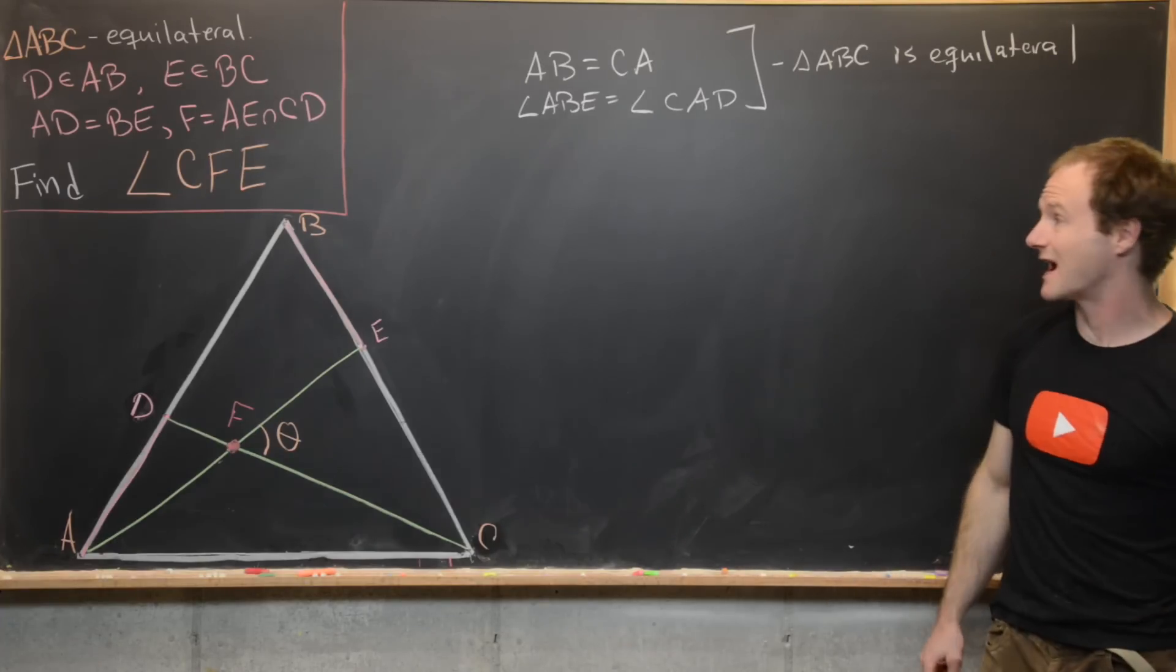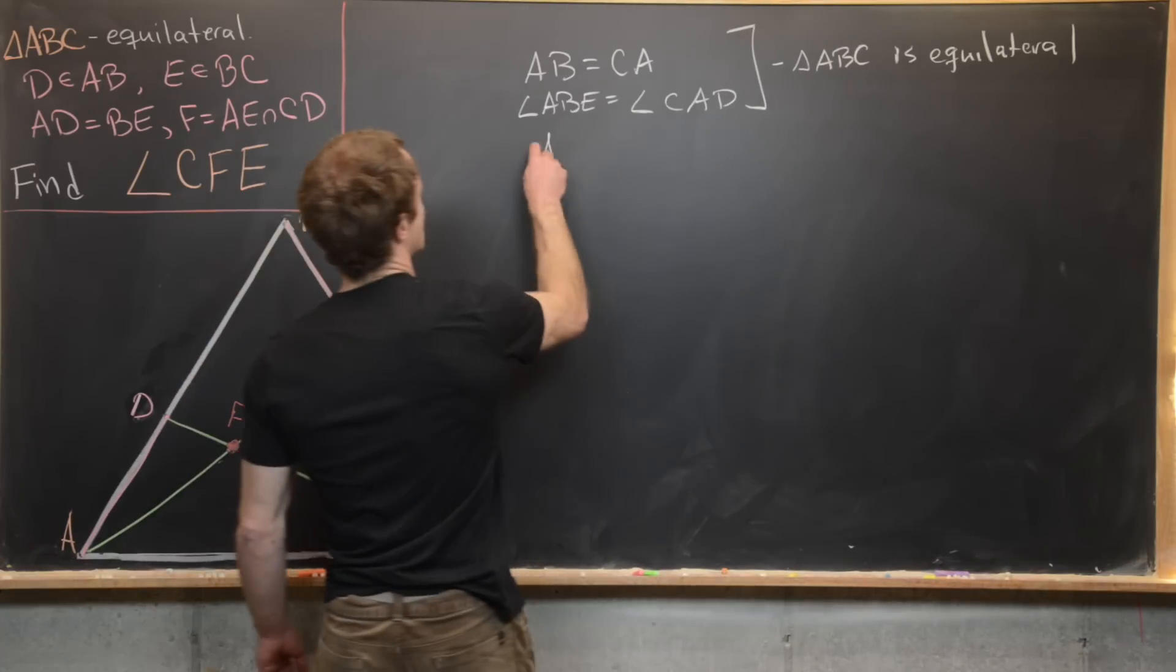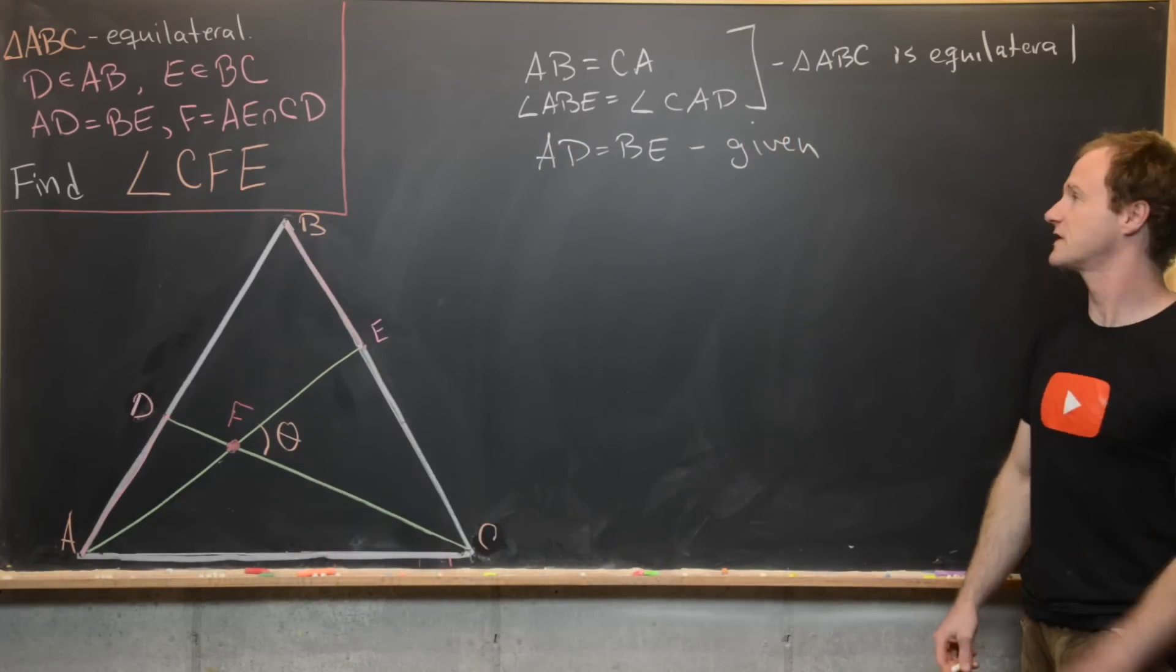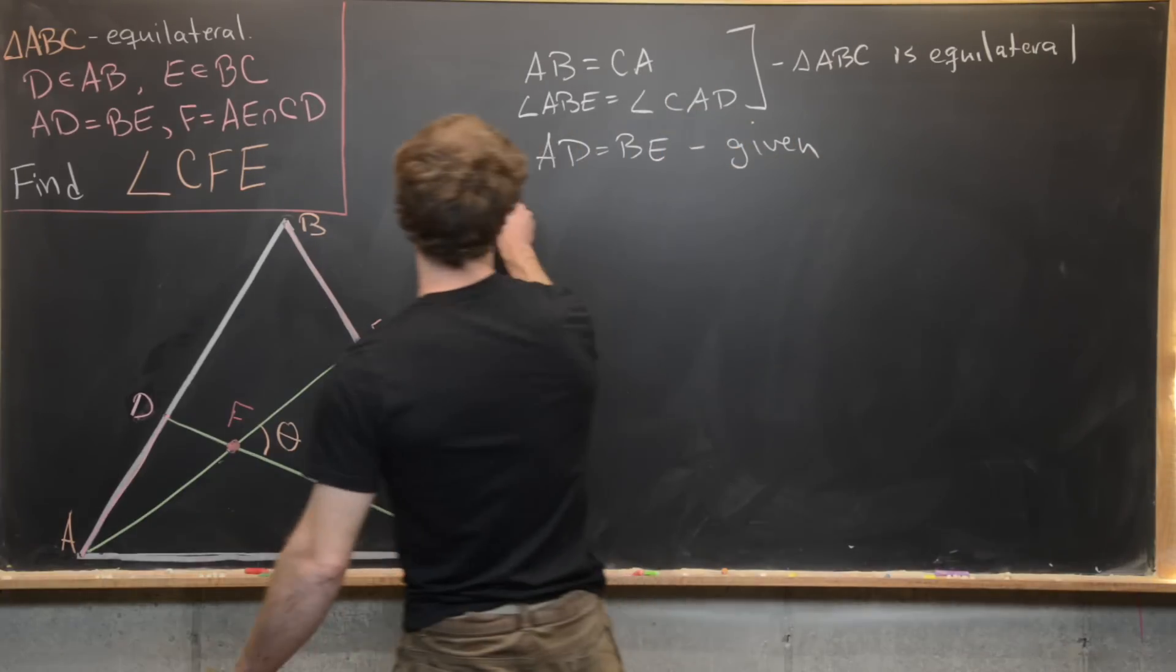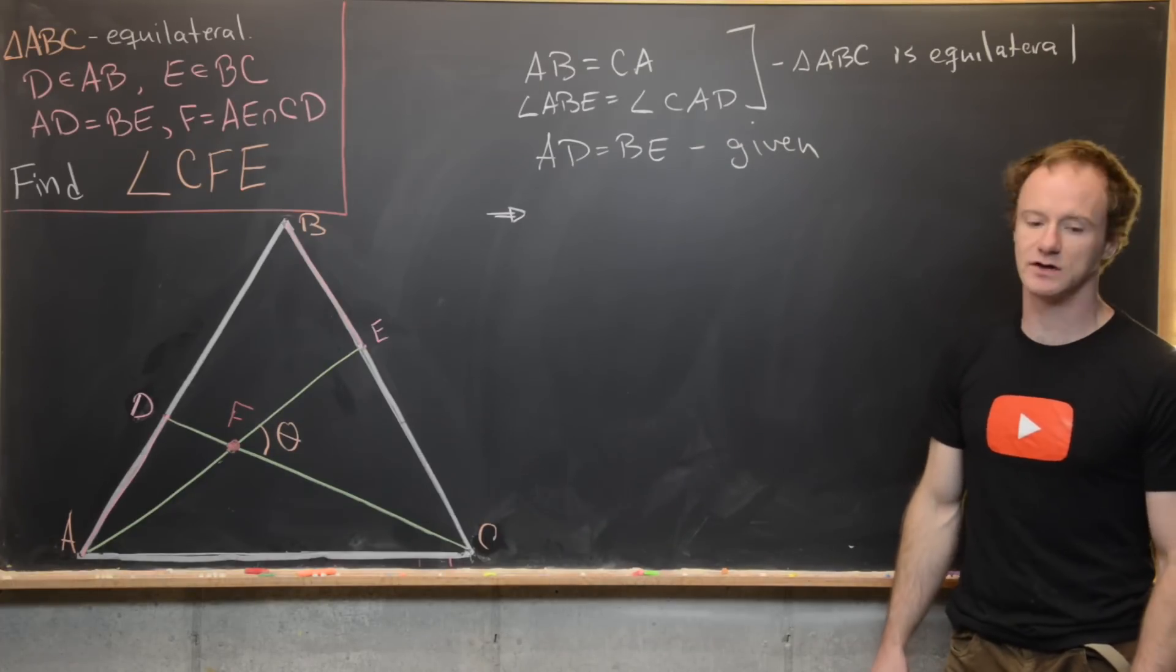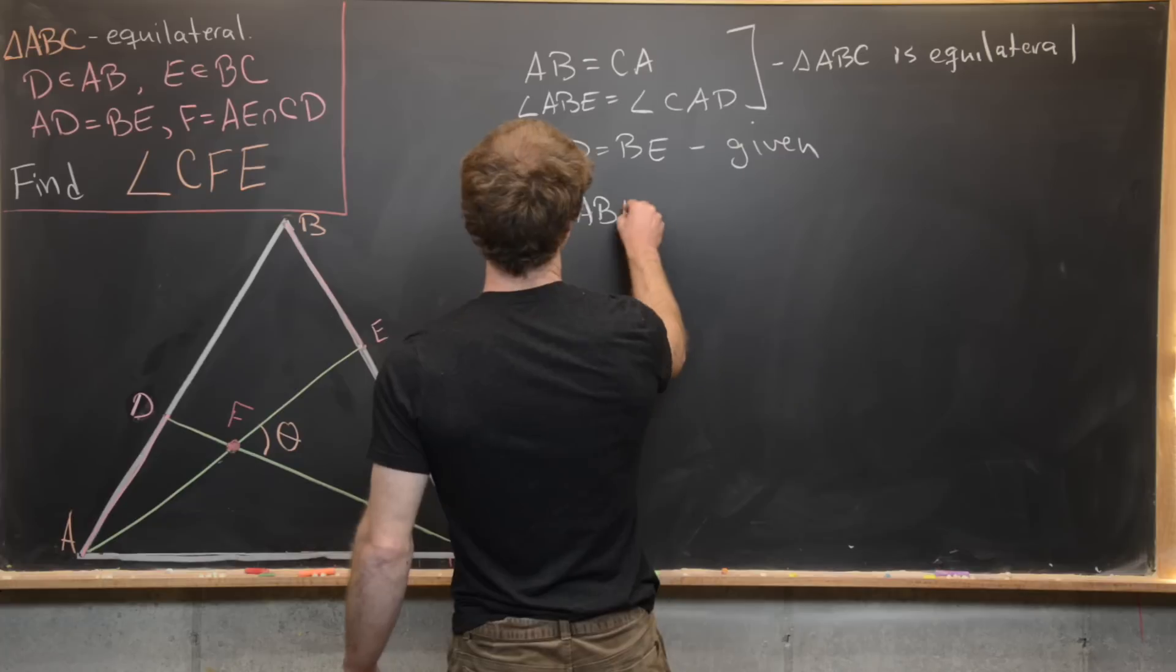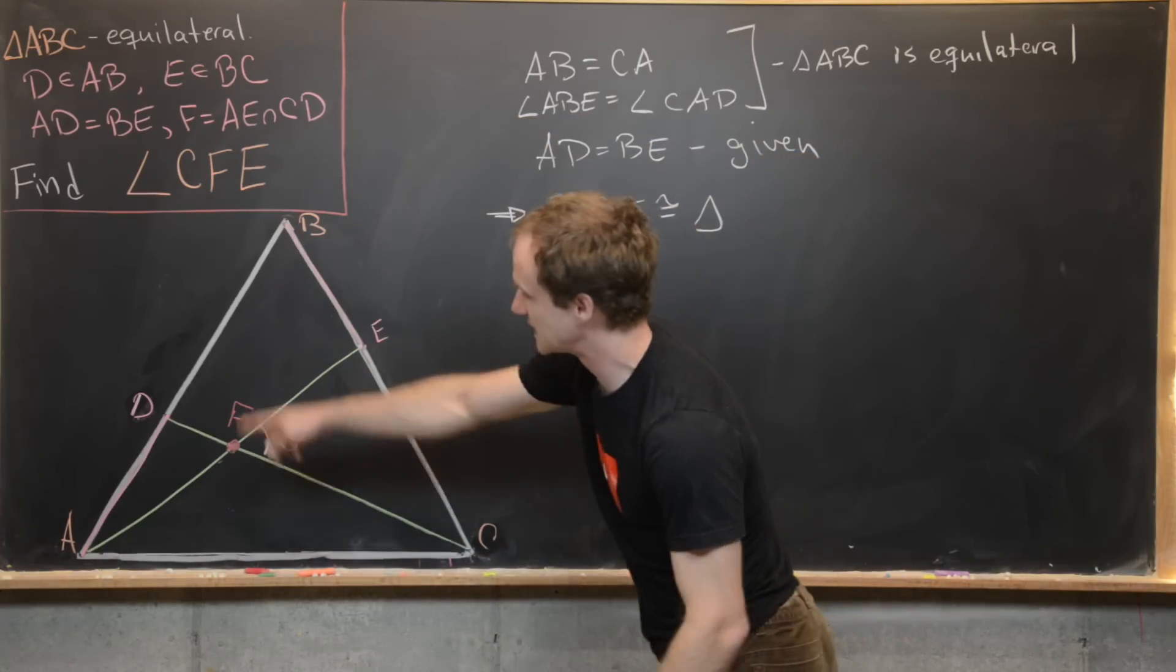Now we can apply our given fact, which is that AD equals BE. So let's write that here: AD equals BE. And so that's given in the problem. And so these three things together, side-angle-side, imply that those two triangles that seem to be congruent are actually congruent. So in other words, we have triangle ABE is congruent to triangle CAD.